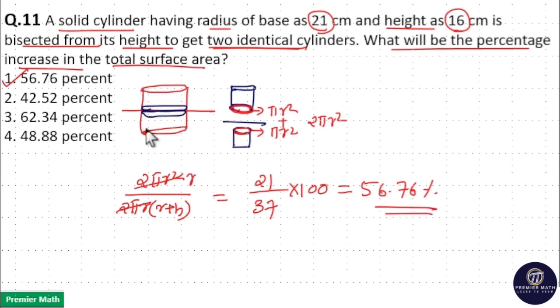Here, this total surface area means surface area of these two bases and curved surface area. When you bisect it, these two bases are equal and curved surface area is also equal, but you are creating two additional bases.